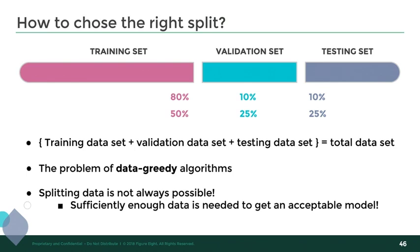Sometimes it's not even possible to split data because you just don't have enough data to get an acceptable model. In that case, you can play with cross-validation or other techniques, but sometimes you have to get really crafty to come to a good solution. Again, it shows you how important it is to have high quality data, but also a decent amount of data.